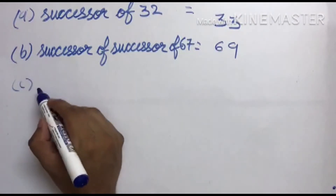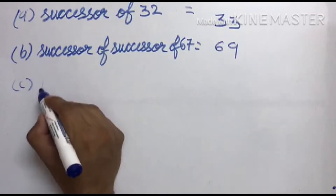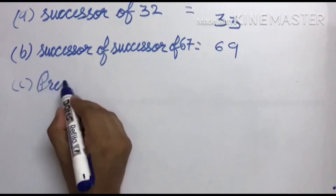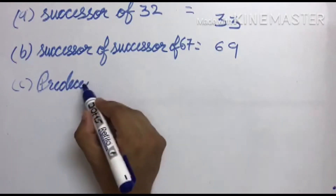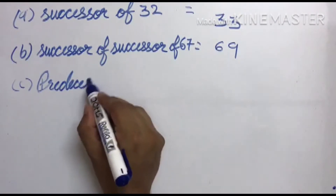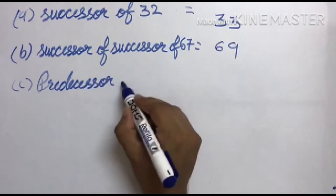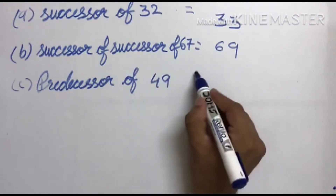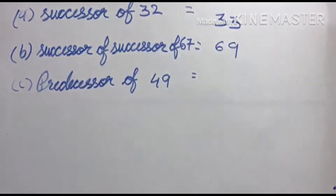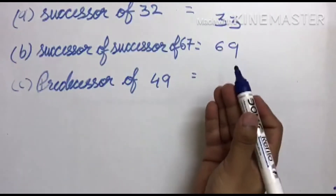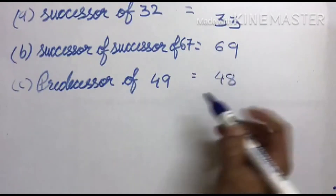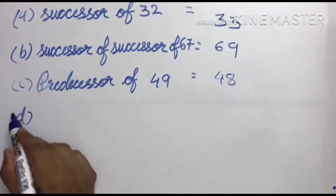Third number: the predecessor of 49. Predecessor यानि उसके पीछे नंबर — 49 के पीछे कौन आता है? 48. And the last digit...